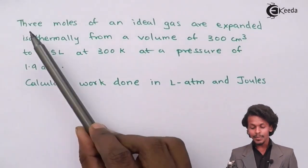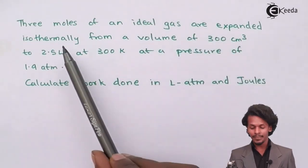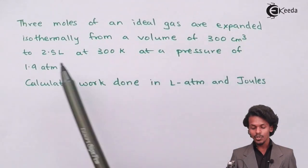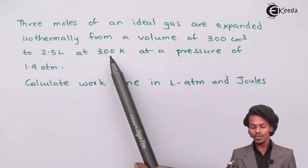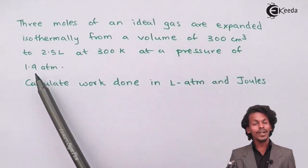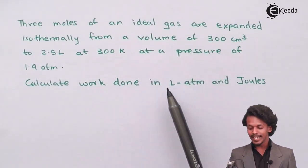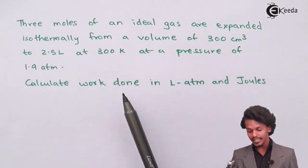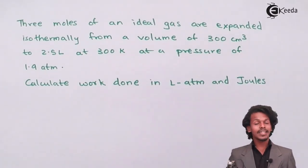The question provided is: three moles of an ideal gas are expanded isothermally from a volume of 300 cm³ to 2.5 liters at a temperature of 300 Kelvin and a pressure of 1.9 atmosphere. We have to calculate the work done in liter-atmosphere as well as in joules.